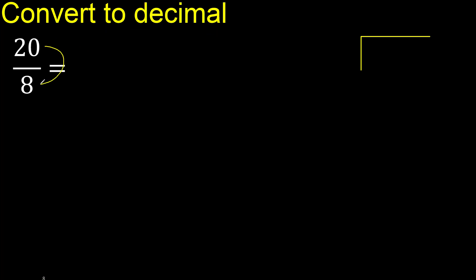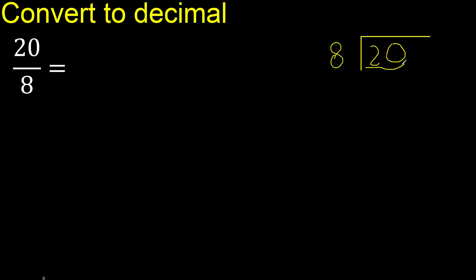20 divided by 8. 2 is less, therefore next. 0, 20. 20 is not less.